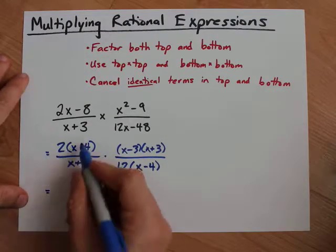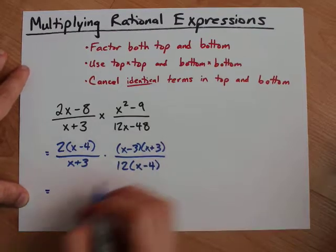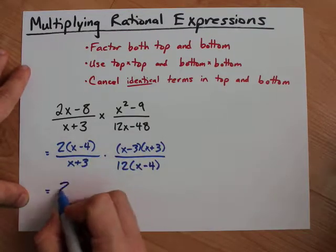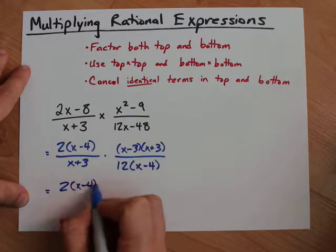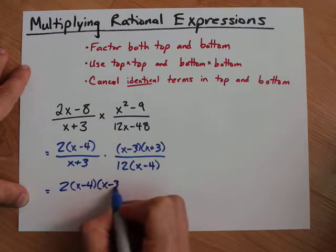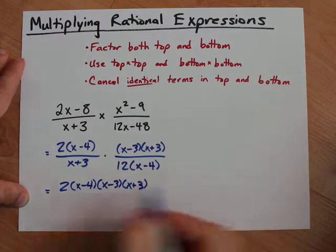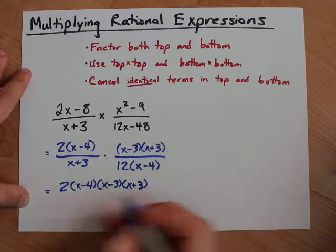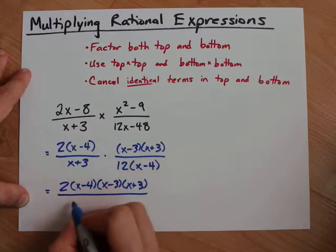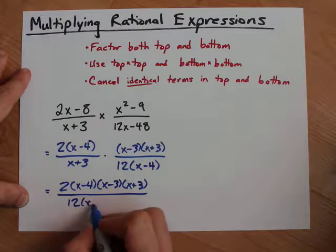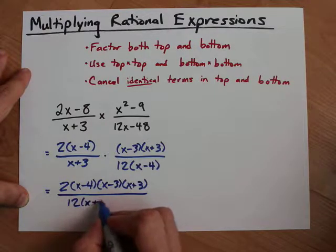Now, when I multiply top times top and bottom times bottom, I end up with 2 times (x-4) times (x-3) times (x+3). Keep all your factors separate, but they're all multiplied together. And my bottom has a 12 and an x+3 and an x-4.